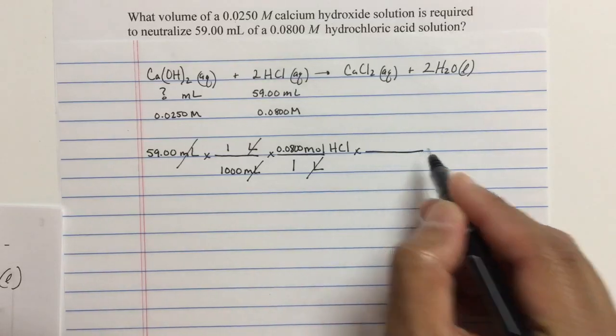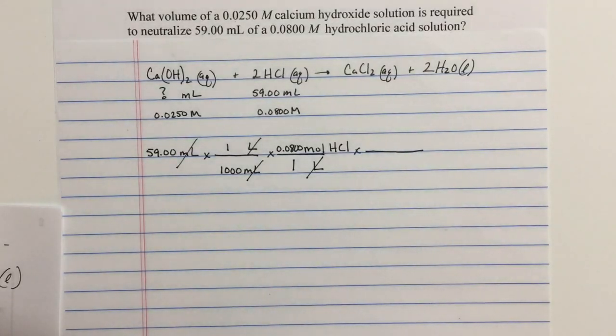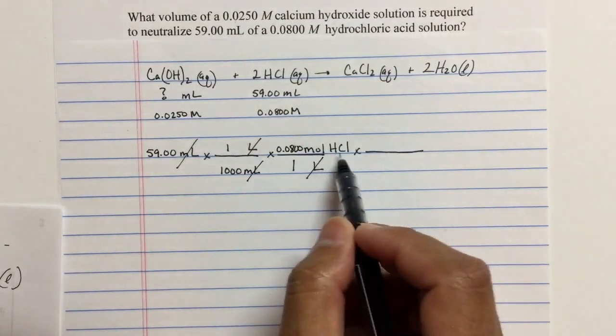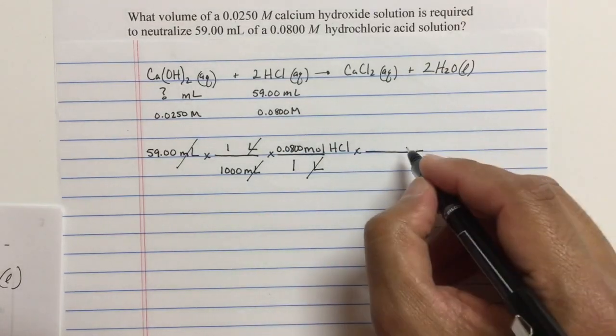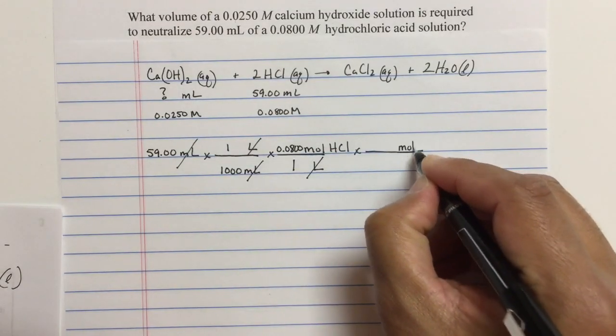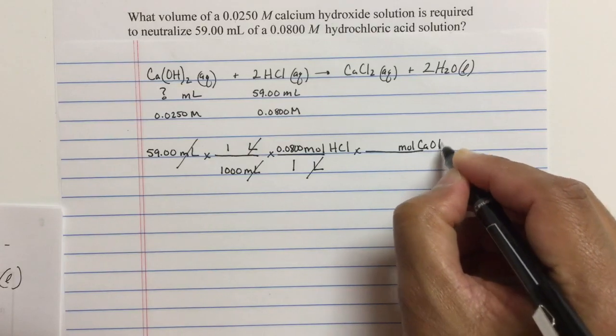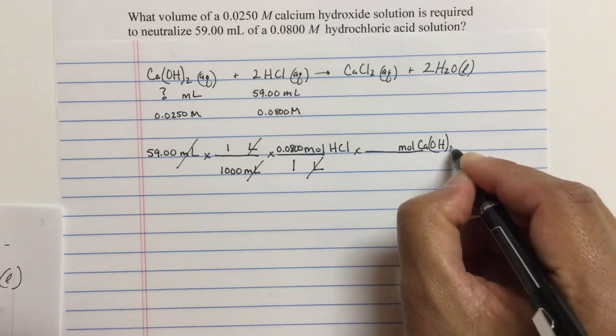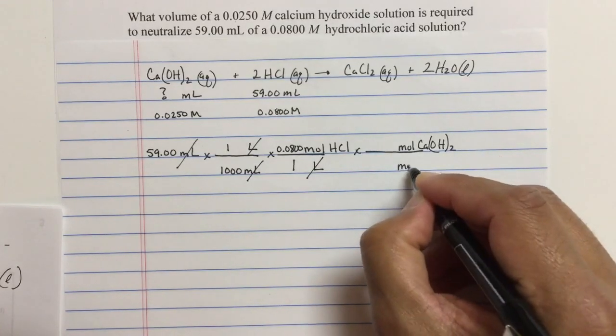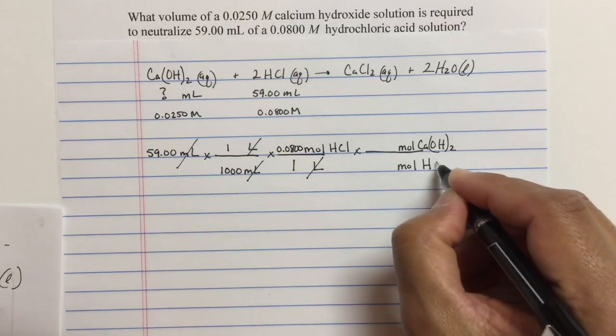Remember, stoichiometry is taking advantage of those mole to mole ratios. So let's take our mole of HCl, convert to mole of the calcium hydroxide, and cancel mole of HCl.